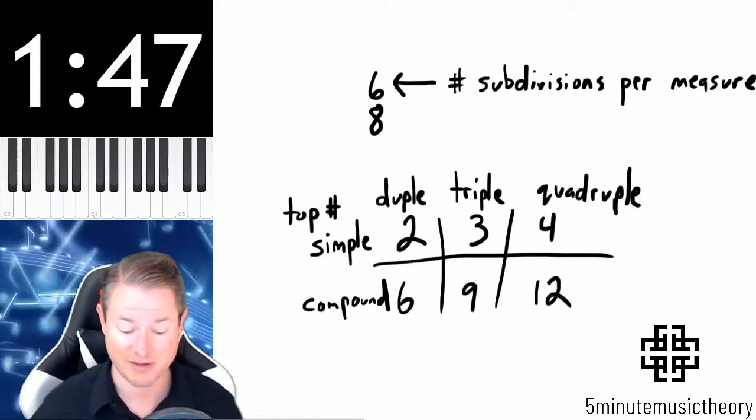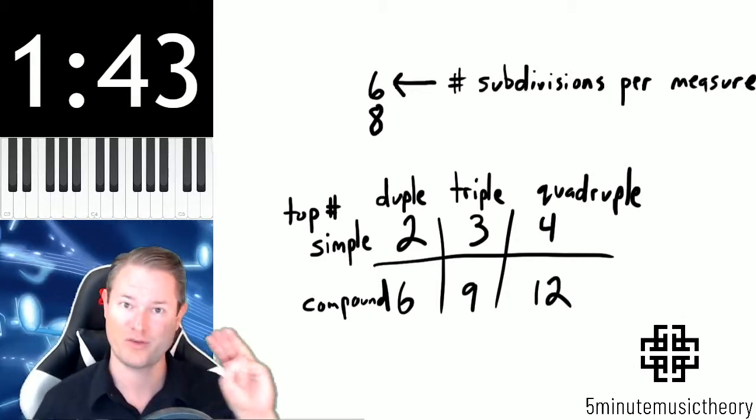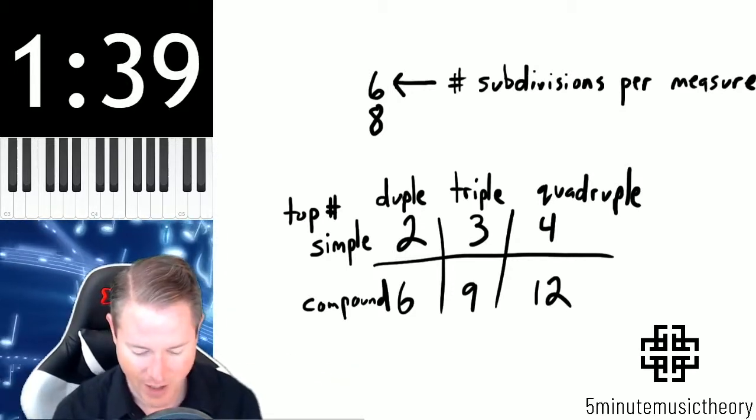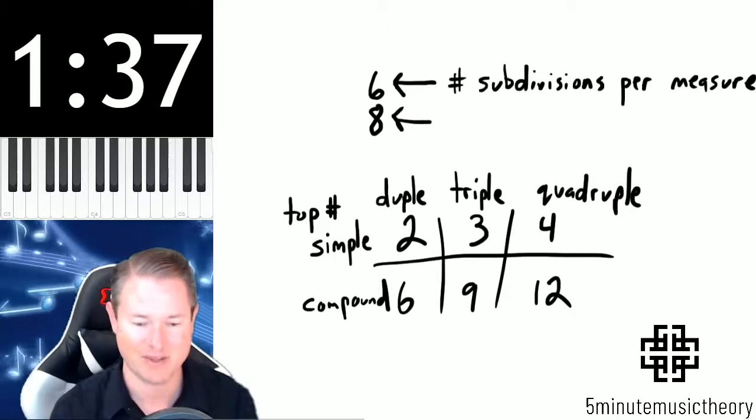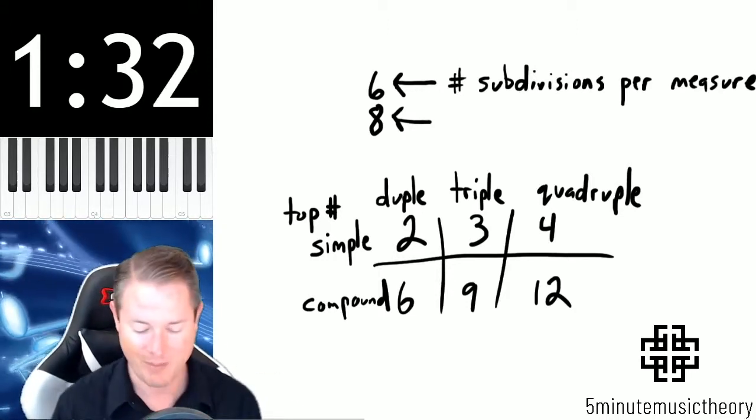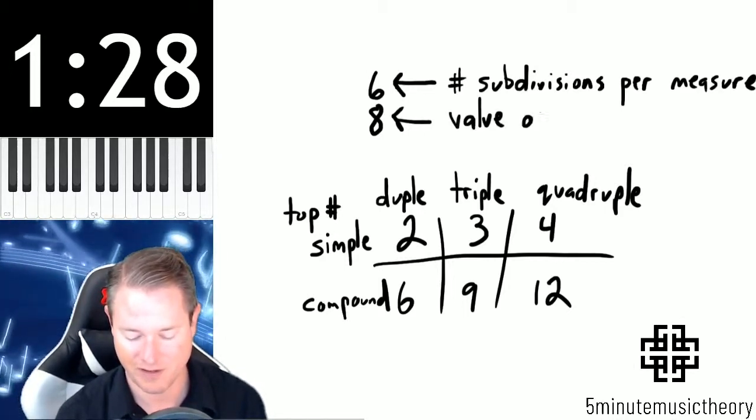So there are 6 subdivisions, but 2 beats. So that means that each beat is worth 3 of those subdivisions. 6 divided by 2 is 3. The bottom number means exactly the same thing with one little difference. In compound meter, that indicates the value of the subdivision.